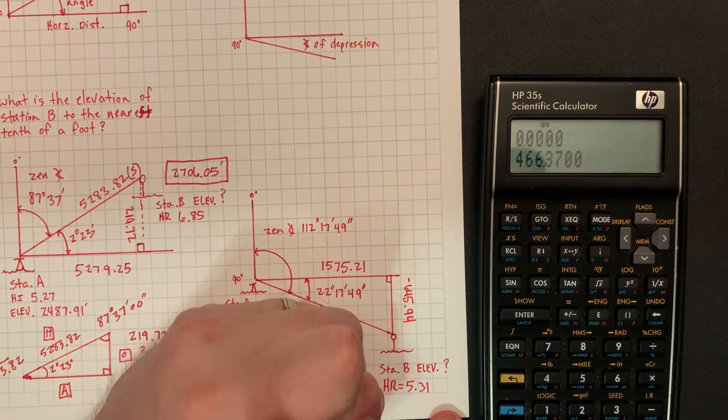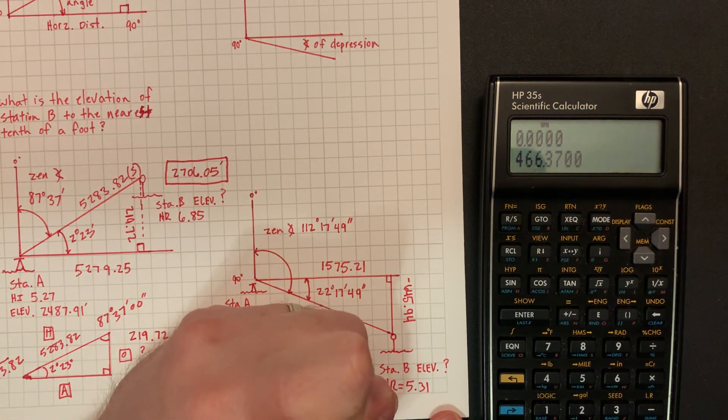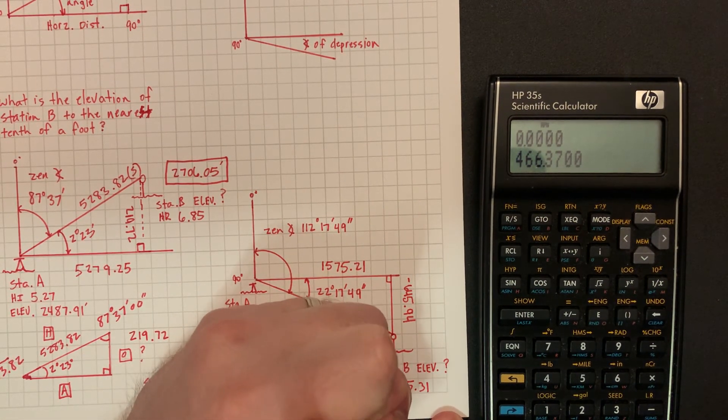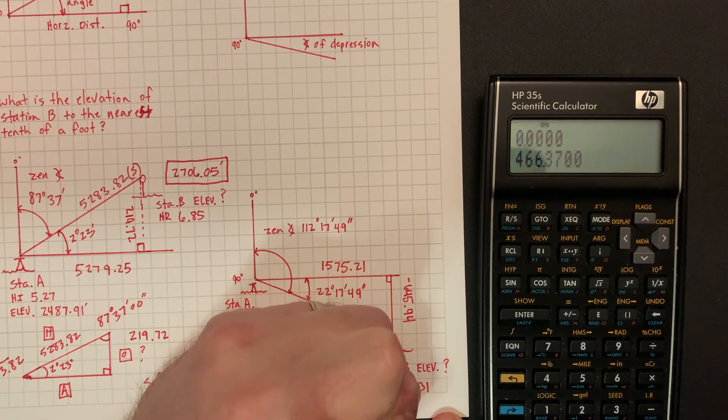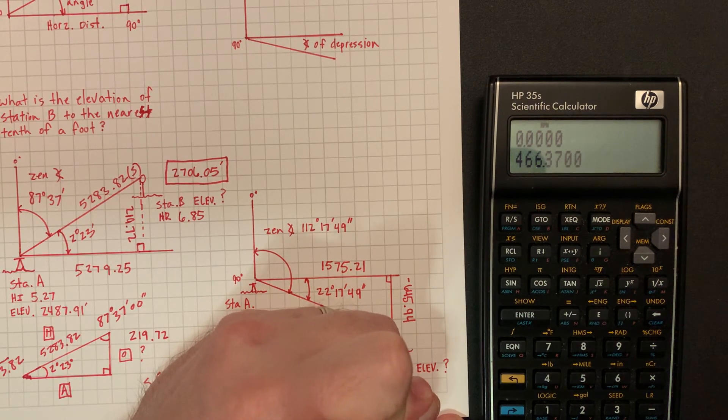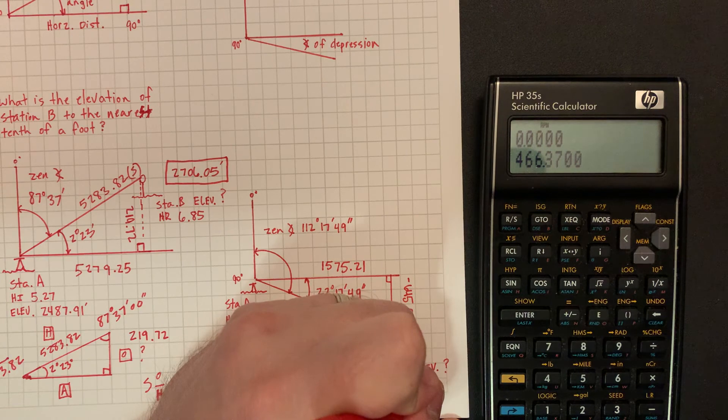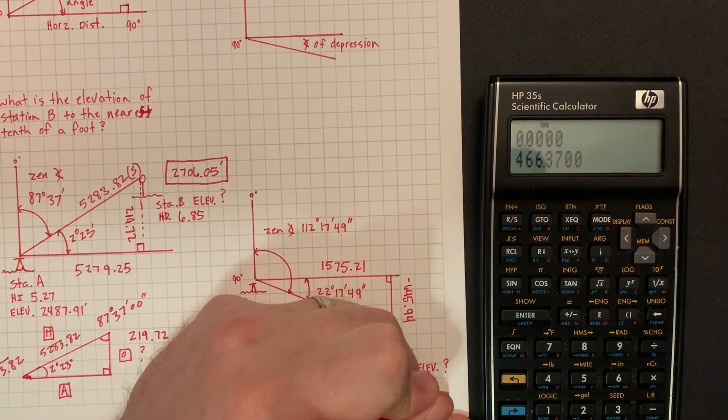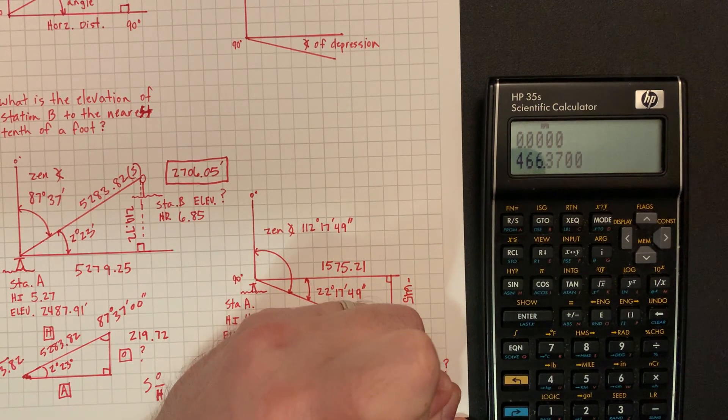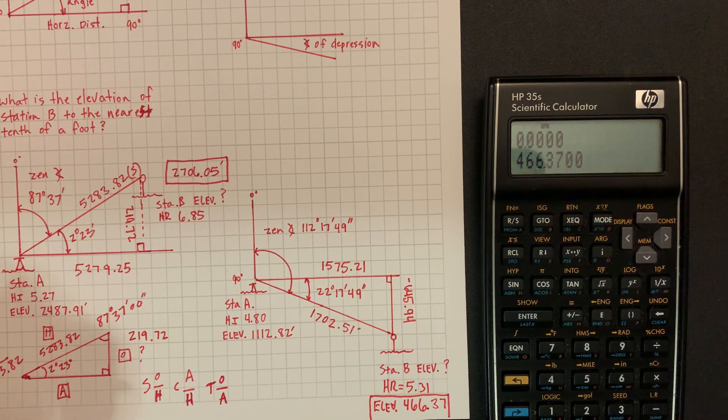And our elevation is 466.37. A lot easier than the first one, ain't it?